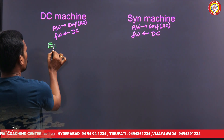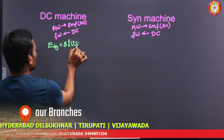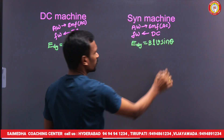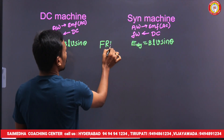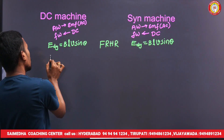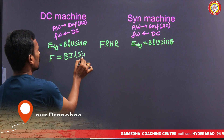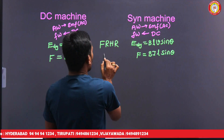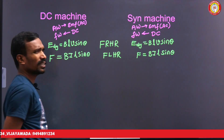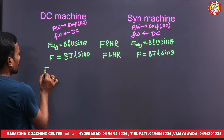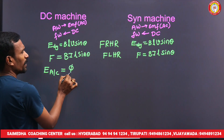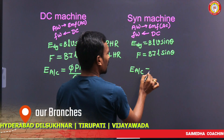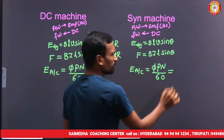If it is a generator, EMF is produced: e = Blv sinθ. The EMF direction is given by Fleming's right-hand rule. If it is a motor, F = Bil sinθ, and the force direction is given by Fleming's left-hand rule. The average EMF per conductor is 5pN/60 — both are the same in DC and synchronous machines.